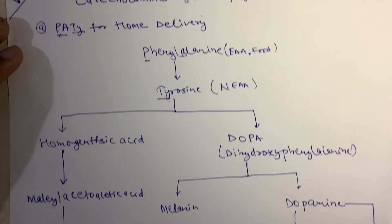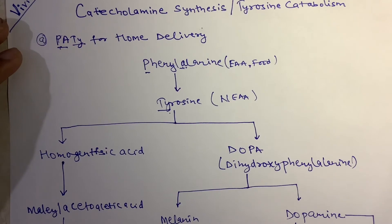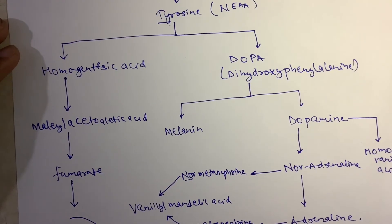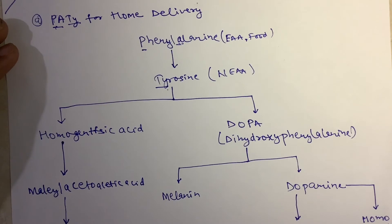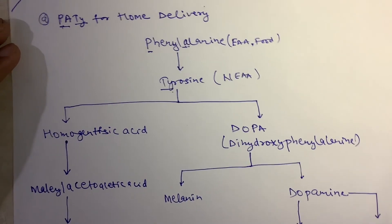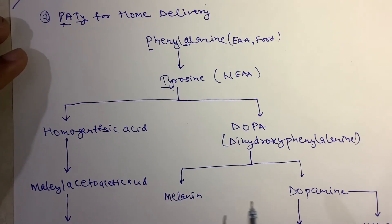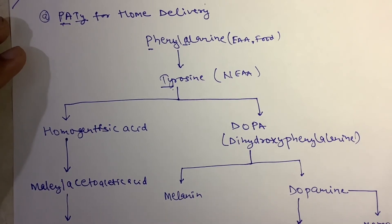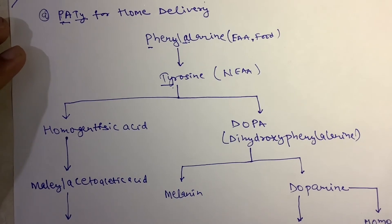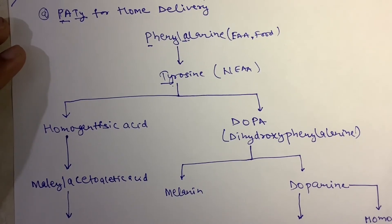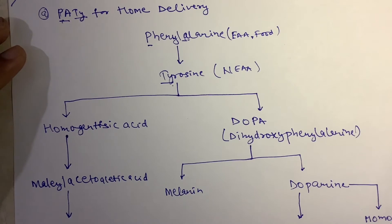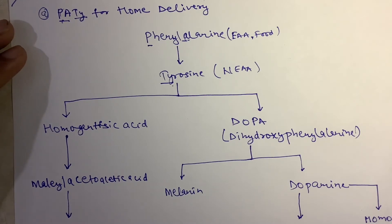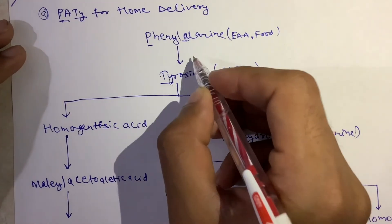This is our overview of the catabolism pathway. Now I will highlight only the main high-yield enzymes that are frequently asked in exams. I will not discuss all enzymes because trying to remember all of them can cause the important ones to get mixed up. I will focus only on those that are high yield and of clinical relevance.